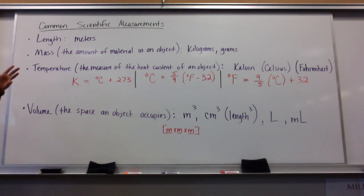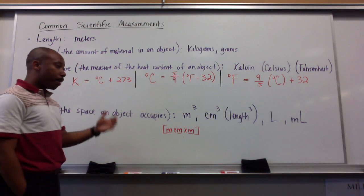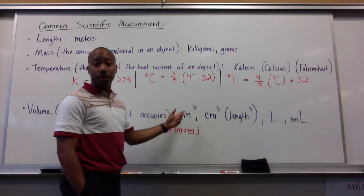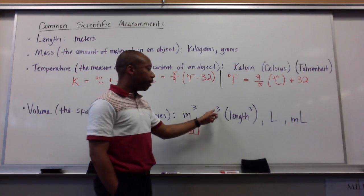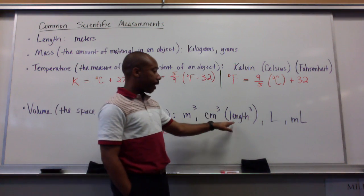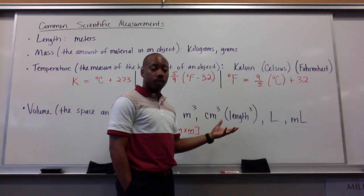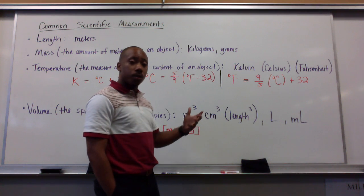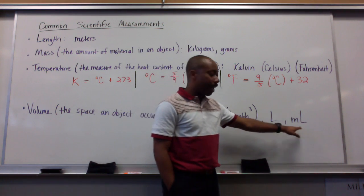Now, another common scientific measurement is volume. This is the space that an object occupies. Common measurements are cubic meters, or some people say meters cubed, but more commonly it's called cubic meters. Cubic centimeters, or any other length cubed. So any other unit of length cubed will be considered a volume. Also, units of volume could be a liter or a milliliter.